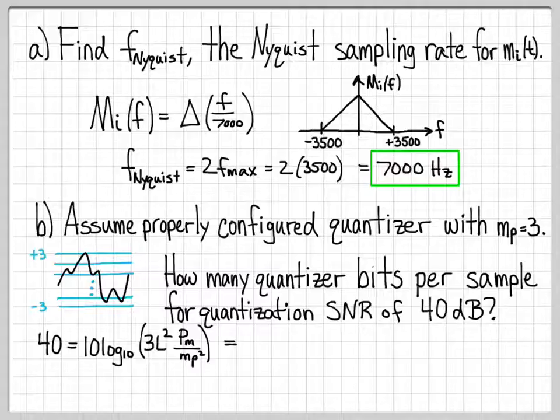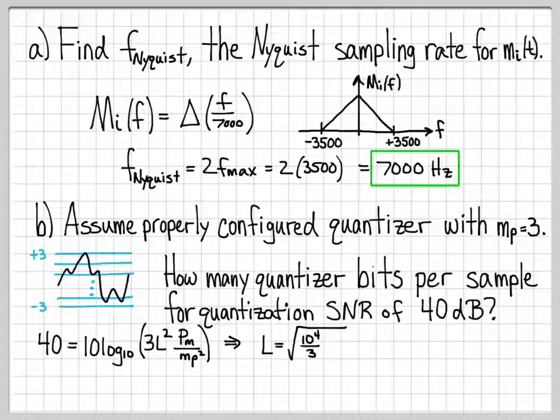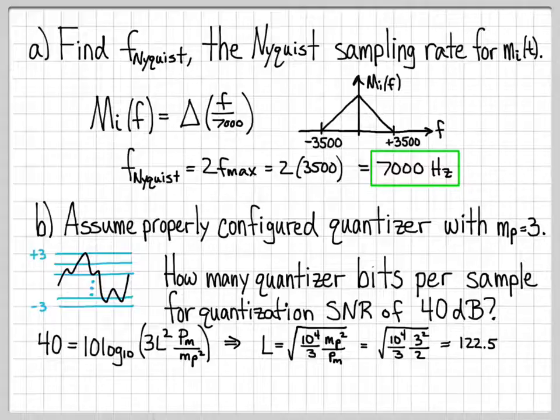So for this problem, we know what P is. We know what M is. So we can actually rearrange this and solve for L. If I move the 10 to the other side and then take the exponent to the power 10 and then take the square root to isolate L, I can rearrange this equation in terms of L. So I would have L equals the square root of 10 to the fourth divided by 3. That's the 3 that got moved to the other side, times m_P squared over P_M. This is what I would obtain after I had done that algebra to isolate L. And now we can go ahead and just plug in what we know for this problem. We know that we have our quantizer set up with m_P equals 3. So I have a 3 squared. And I also have each power is equal to 2. So after I plug this in, I get the number 122.5. So if I solve for this equation, I get the real valued quantity L equals 122.5.